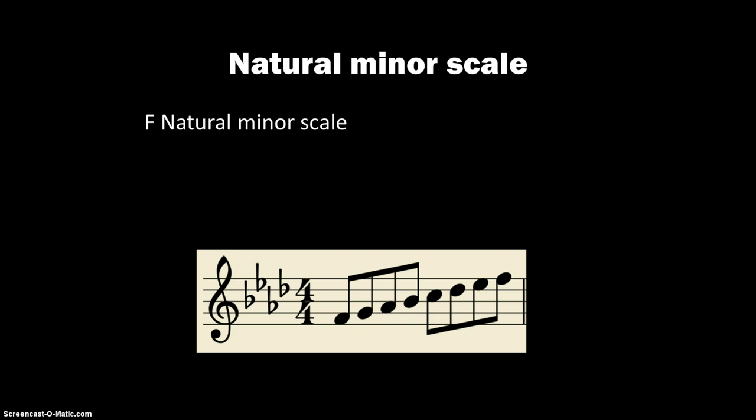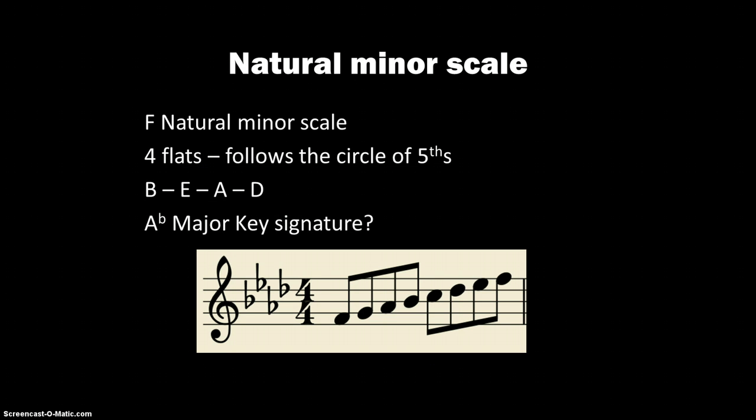So if we were to write this F natural minor scale with a key signature, we'd write it with four flats: B, E, A, and D. But isn't that the same key signature as A flat major? How would you know the difference?